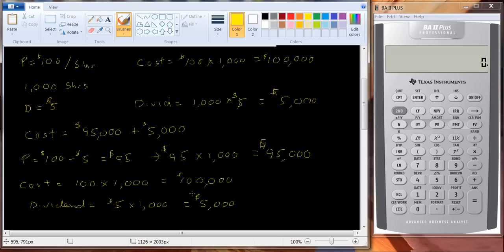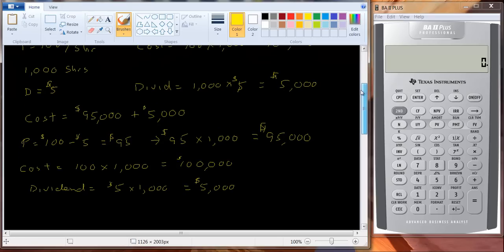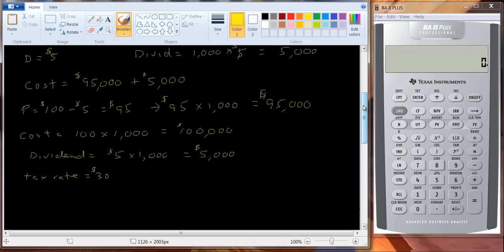Nothing surprising here. But here's the rub. This $5,000 is taxable, so let's say your tax rate is equal to 30%. Then what are you going to get, or what's your after-tax dividend going to be?